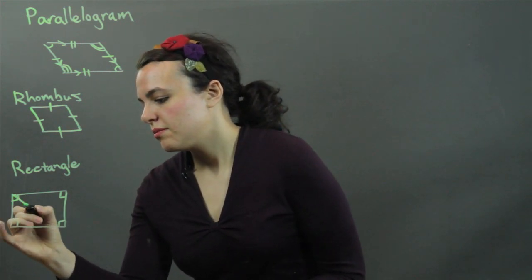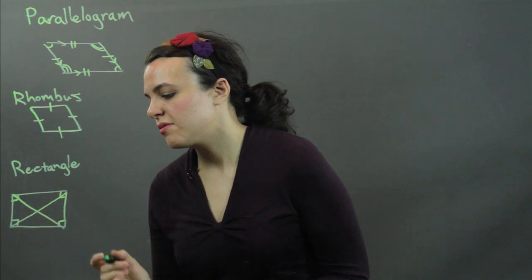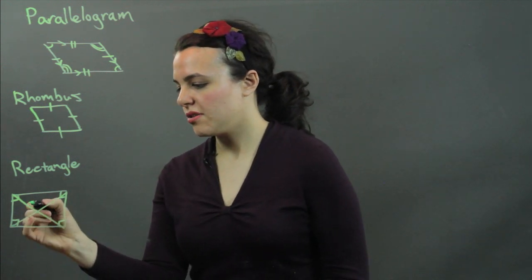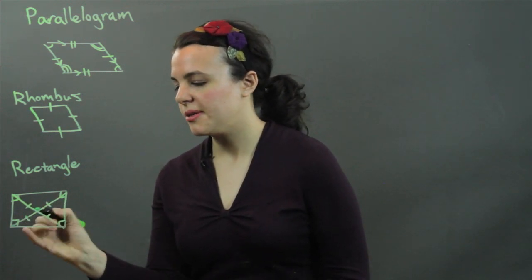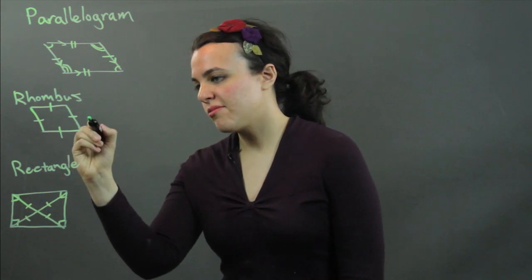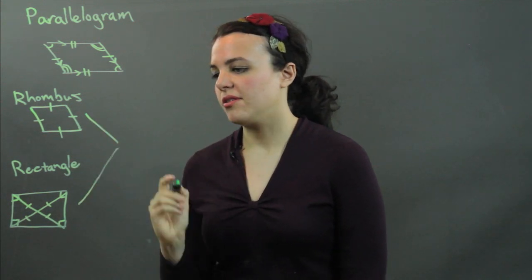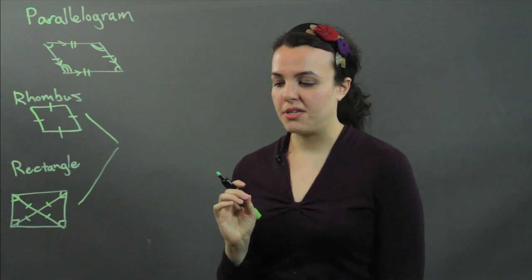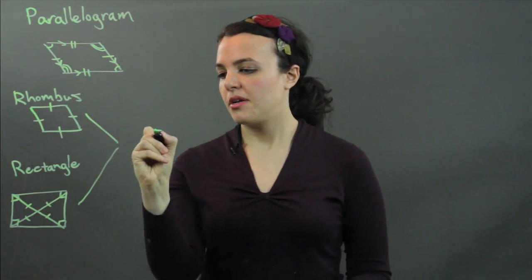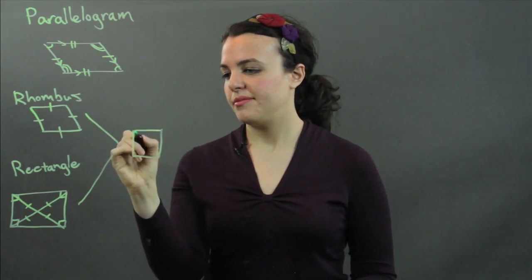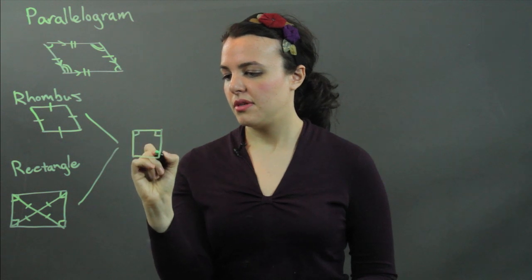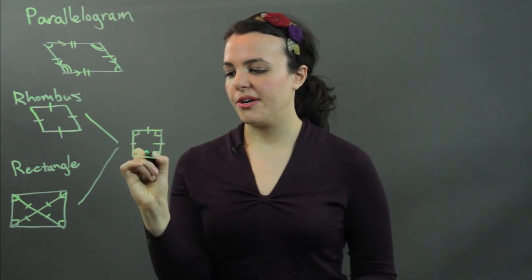Also, the diagonals of a rectangle bisect each other and are themselves congruent. If you combine a rhombus and a rectangle, you get a third specific parallelogram known as a square. There it is in all its glory, the square.